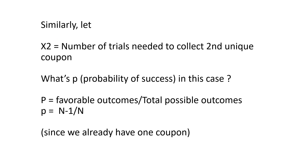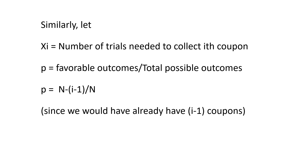Similarly, let X2 be the number of trials needed to collect the second unique coupon. Since we already have one coupon, the favorable outcome is reduced by 1, so p equals n minus 1 over n. We can now generalize this for the ith coupon: let Xi be the number of trials needed to collect the ith coupon. The probability in this case is n minus i minus 1 over n, since we would have already collected i minus 1 coupons.